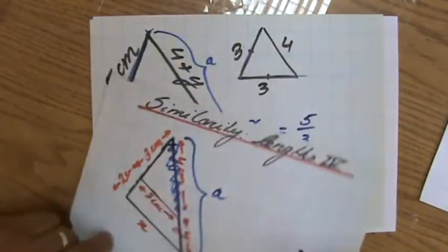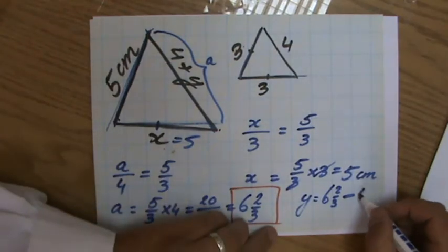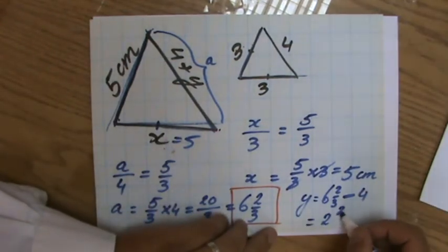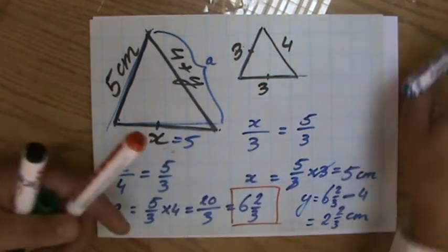Six and two over three, take away four. So my final answer is two and two over three centimeters. Beautiful.